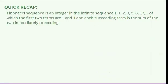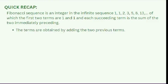Let's have a quick recap about what is the Fibonacci Sequence. The Fibonacci Sequence is an integer in the infinite sequence 1, 1, 2, 3, 5, 8, 13, and so on, of which the first two terms are 1 and 1, and each succeeding term is the sum of the two immediately preceding. The terms are obtained by adding the two previous terms.